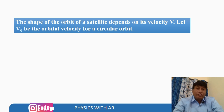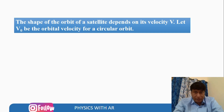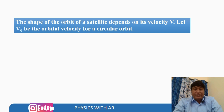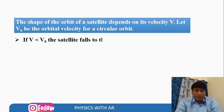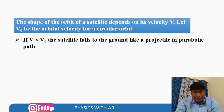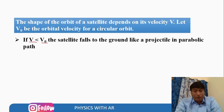Satellites can move in a circular path, elliptical path, or other cases. The shape of the orbit of a satellite depends on its velocity. Let v₀ be the orbital velocity for a circular orbit. If the applied velocity v is less than v₀, then the satellite falls to the ground like a projectile in a parabolic path.